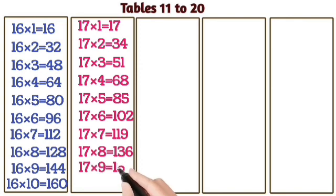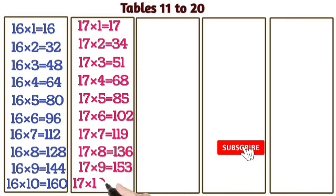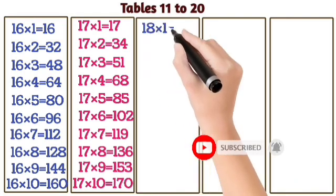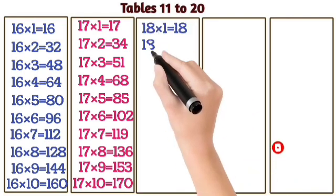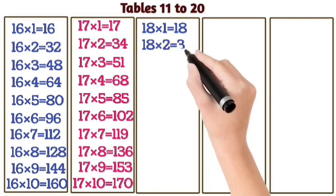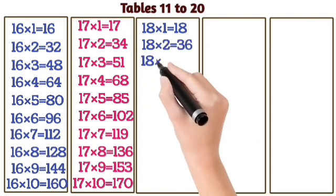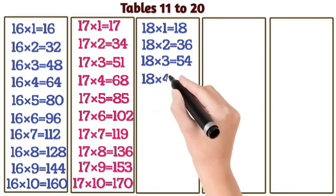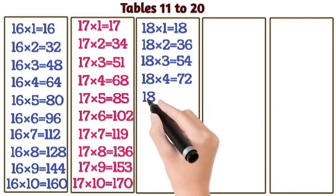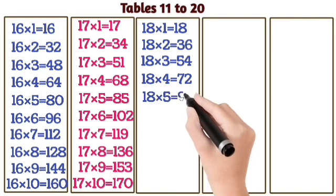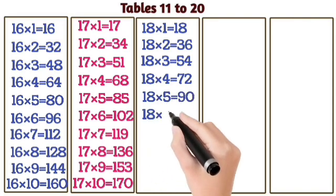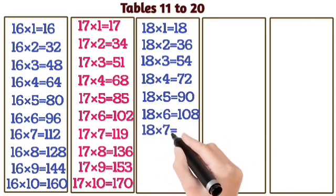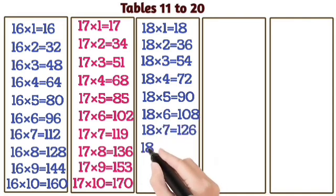17 nines are 153. 17 tens are 170. 18 ones are 18. 18 twos are 36. 18 threes are 54. 18 fours are 72. 18 fives are 90. 18 sixes are 153. 18 sixes are 108. 18 sevens are 126.